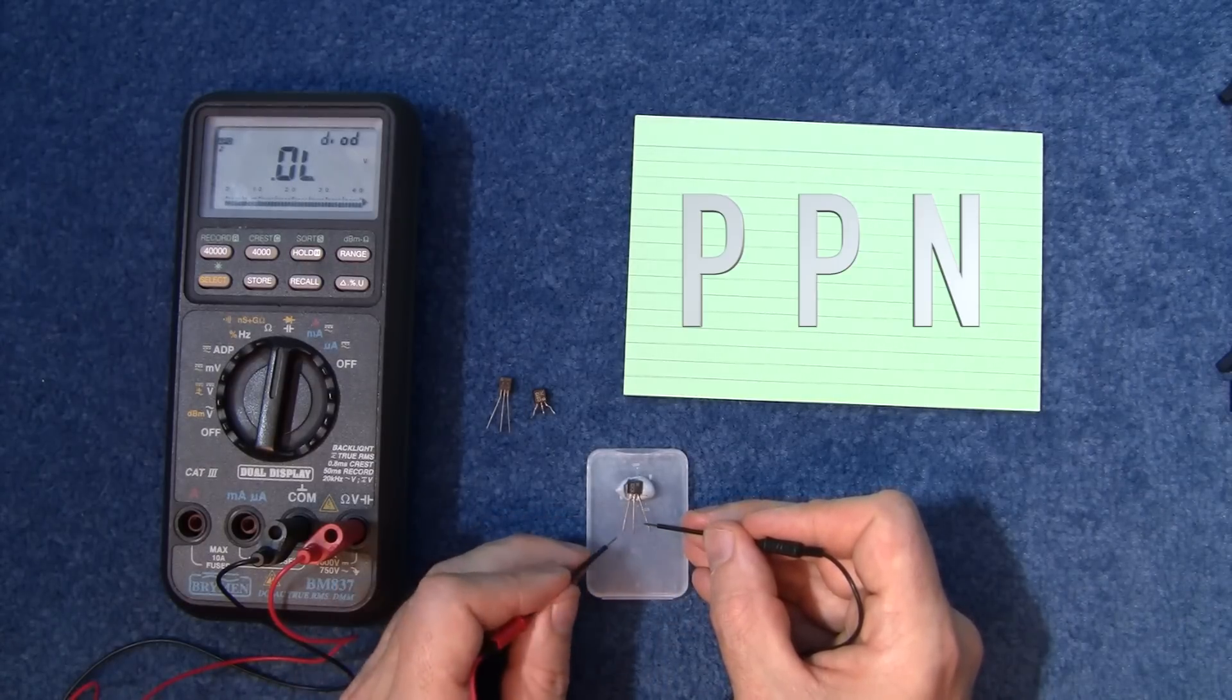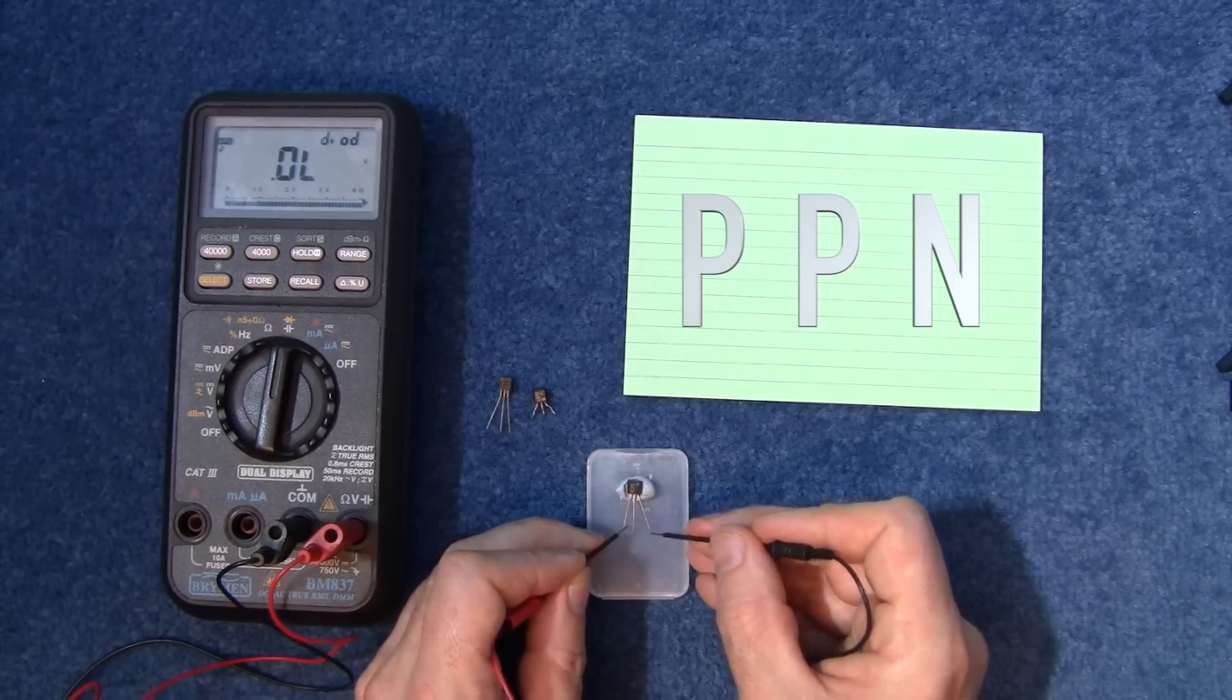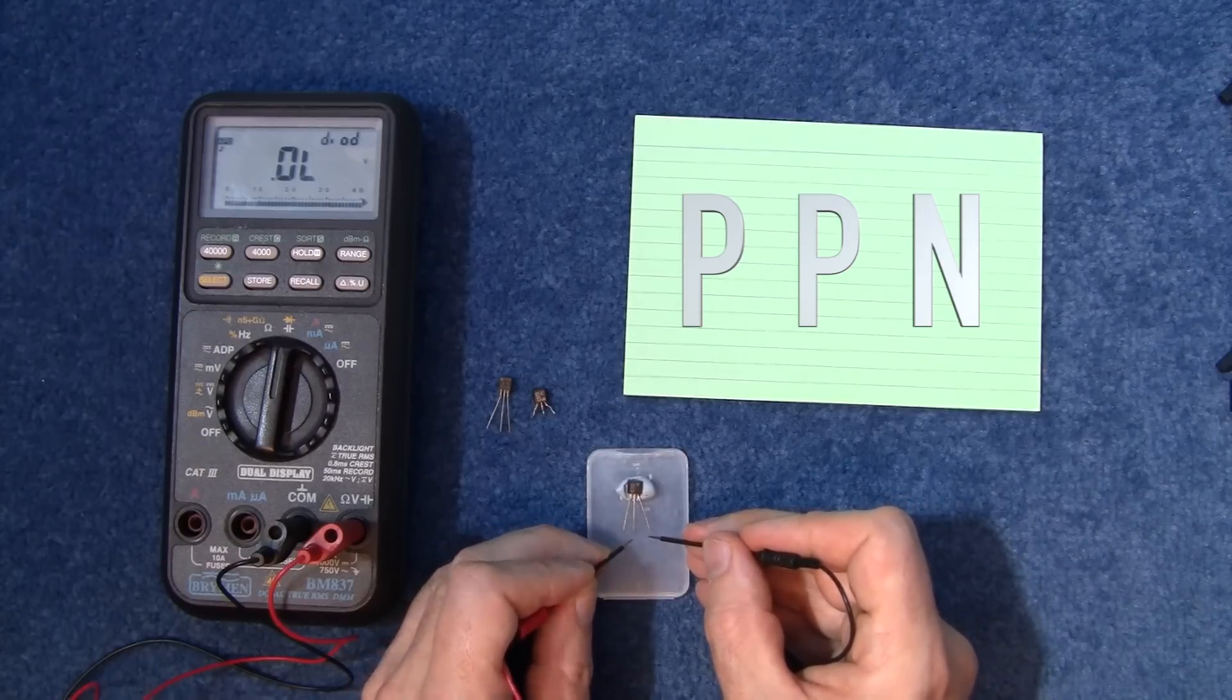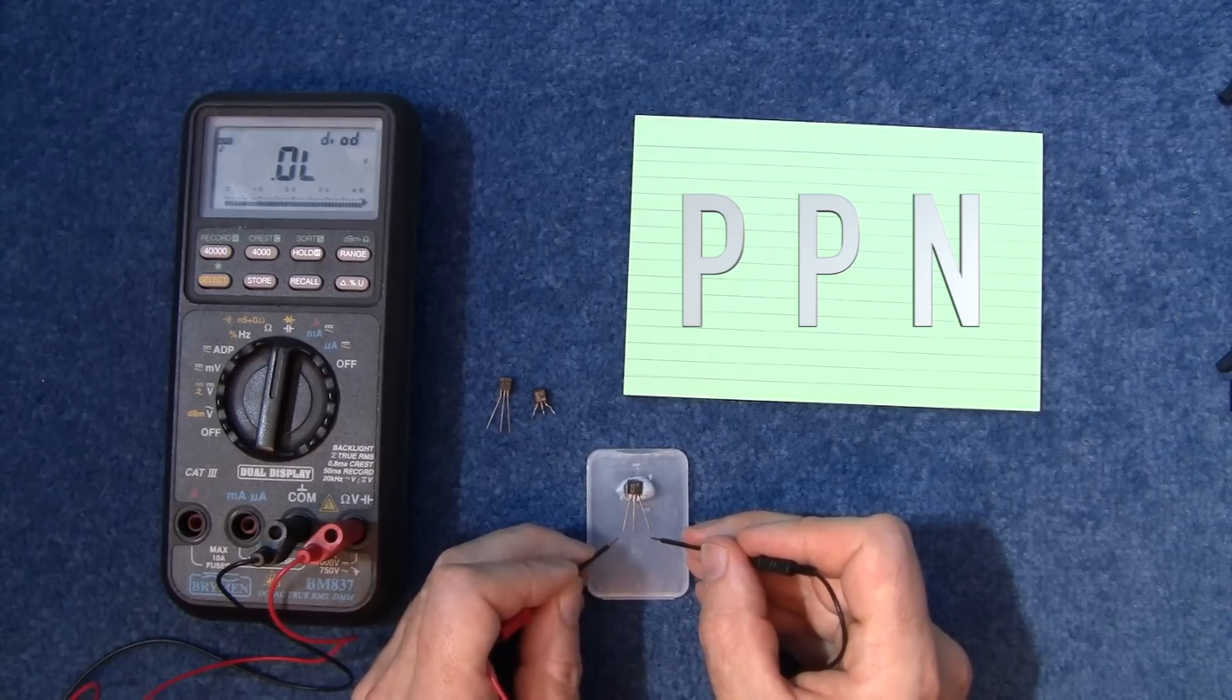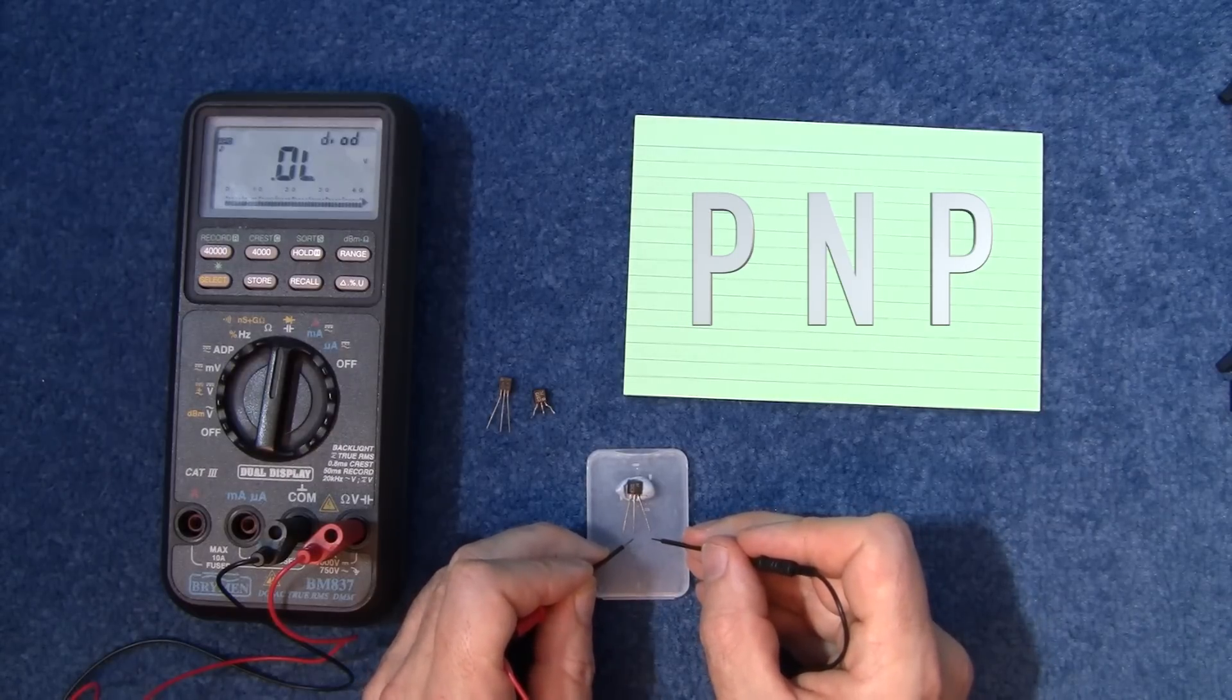So the positive is reading on those two legs and the negative is reading on just this one here. So that's two positives and a negative. So that makes it a PNP transistor.